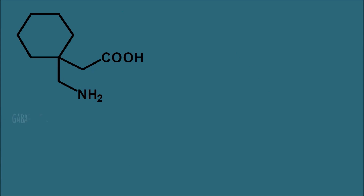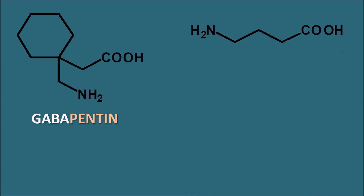This is the structure of Gabapentin and we can observe that the name has some relation with the structure of GABA. GABA is nothing but gamma-aminobutyric acid. We can observe the alpha carbon, the beta carbon, and the gamma carbon. At the gamma portion an amino group is there, and it is a butyric acid, so it is gamma-aminobutyric acid.